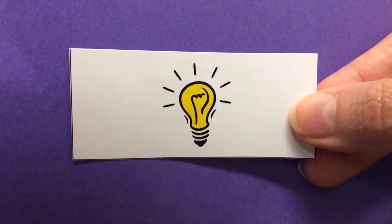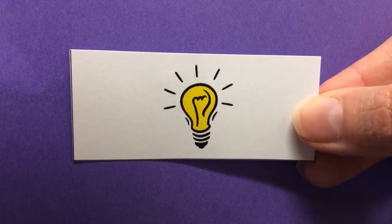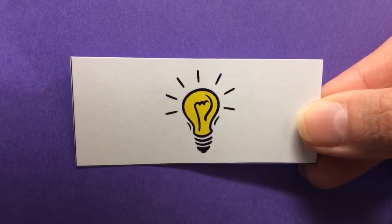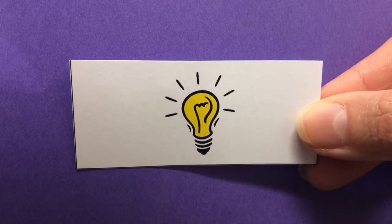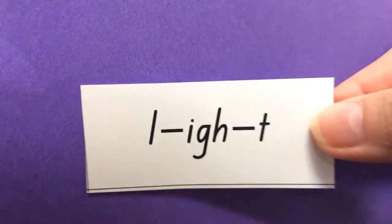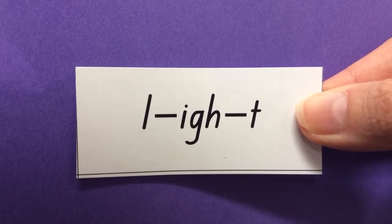Next one is light. Light. At night we like to turn on the light. Light. That bulb is very bright too. Light. Did you get it right? That rhymes.